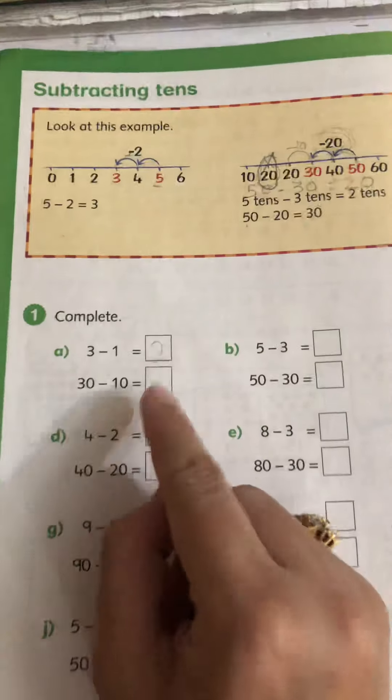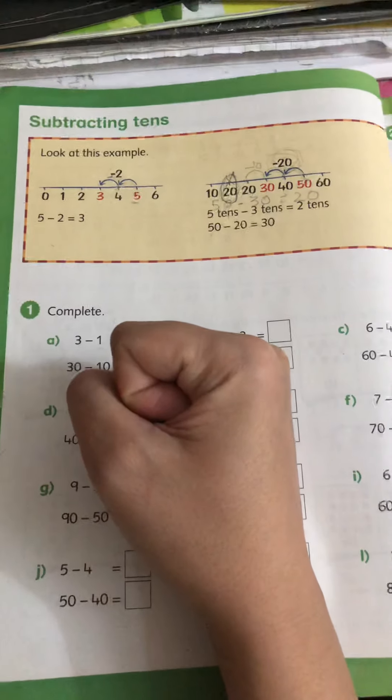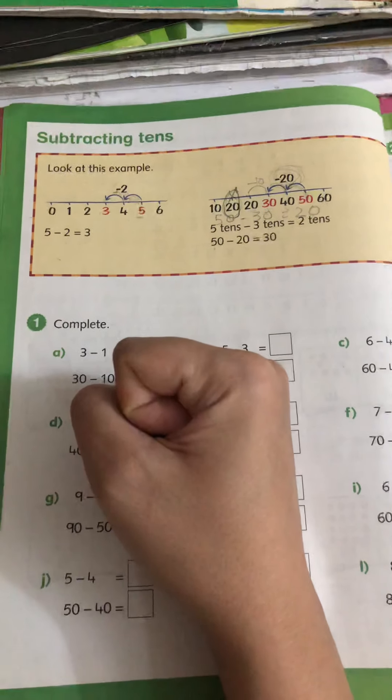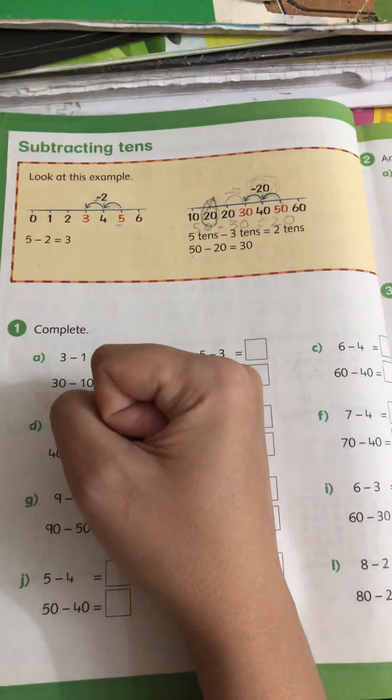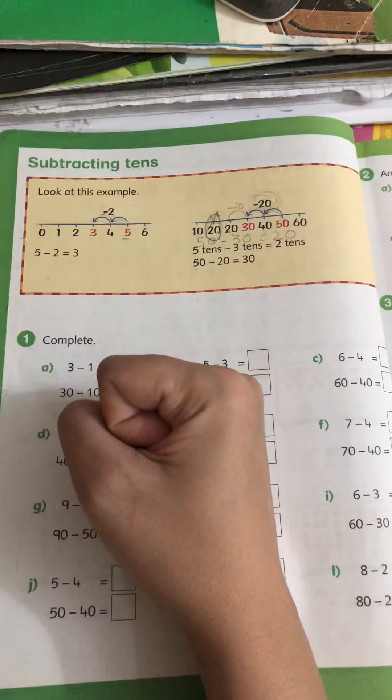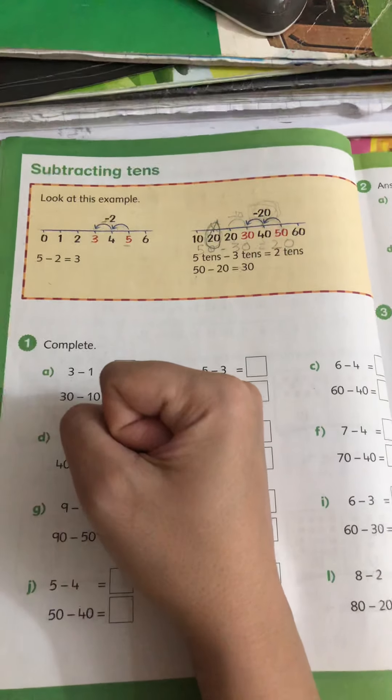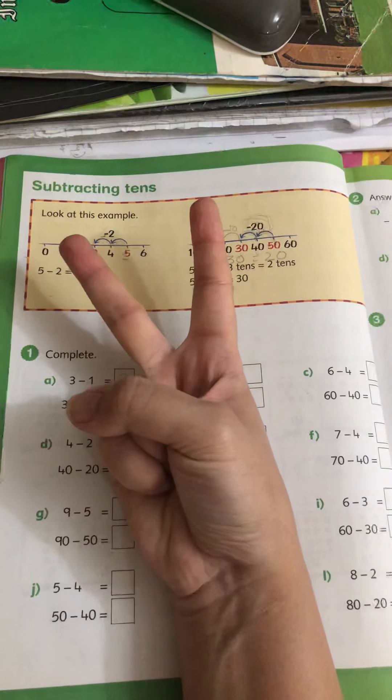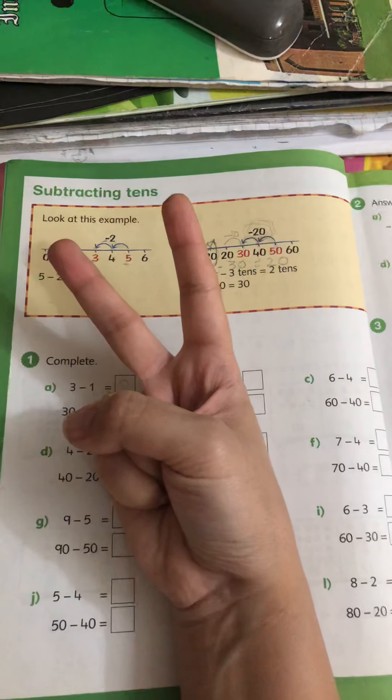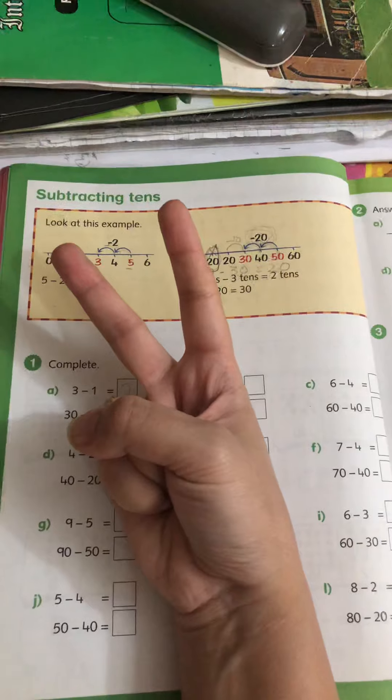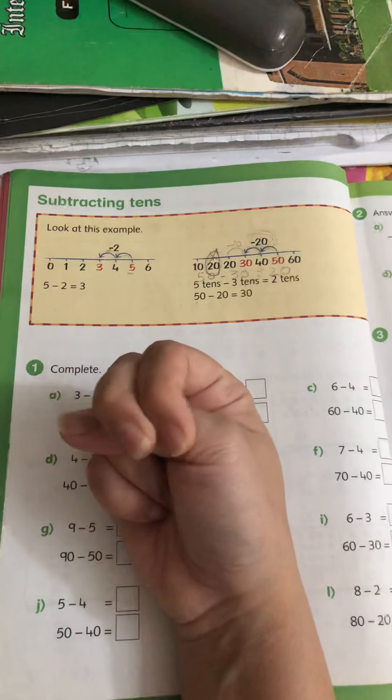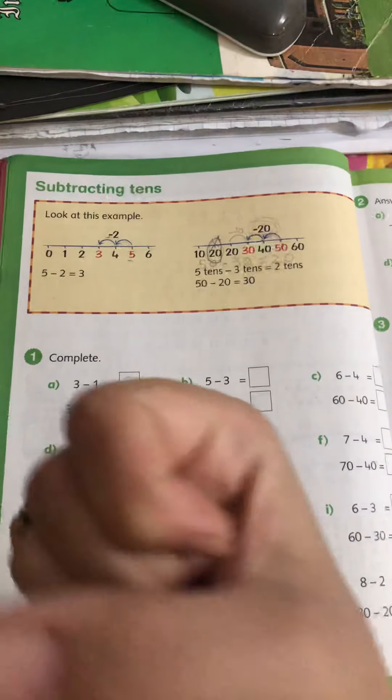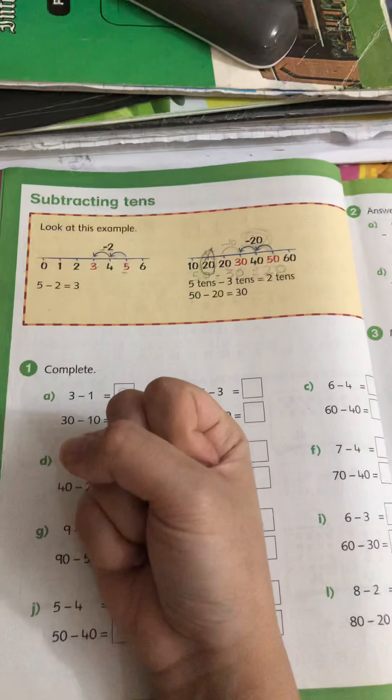You can do it this way or we can do it by doing backward counting. So 30, we have to reach 10. So we will count backwards from 30. 20, 10. So I started backward counting from 30 to reach 10.